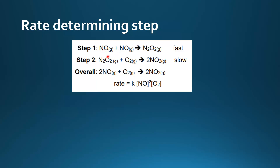So rather than write N₂O₂ in the rate expression, we look at the previous step and write NO to the power of 2. We also include the oxygen, so we have rate equals K times [NO]² times the concentration of oxygen.